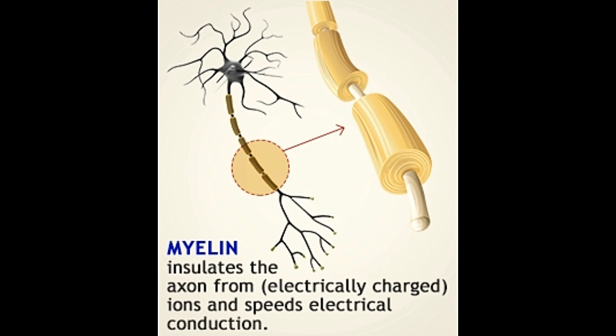According to their function, neurons can be classified into three types: sensory neurons, motor neurons, and interneurons. Sensory neurons receive sensory stimulation from tissues and organs, motor neurons receive the data from sensory neurons and plan or devise a certain response, and interneurons connect sensory and motor neurons.